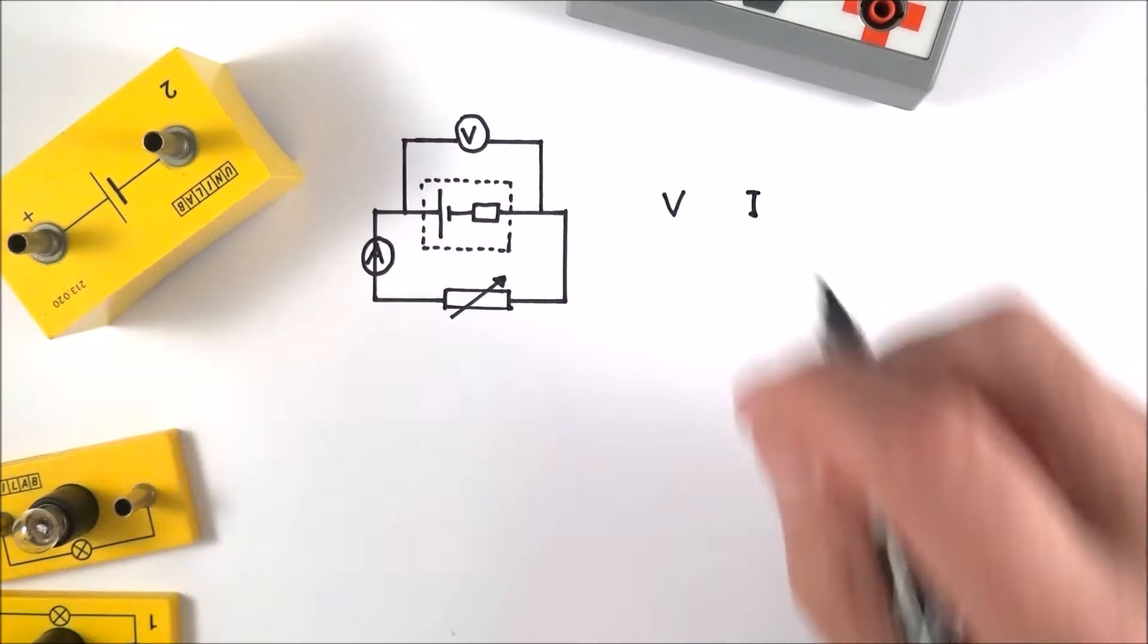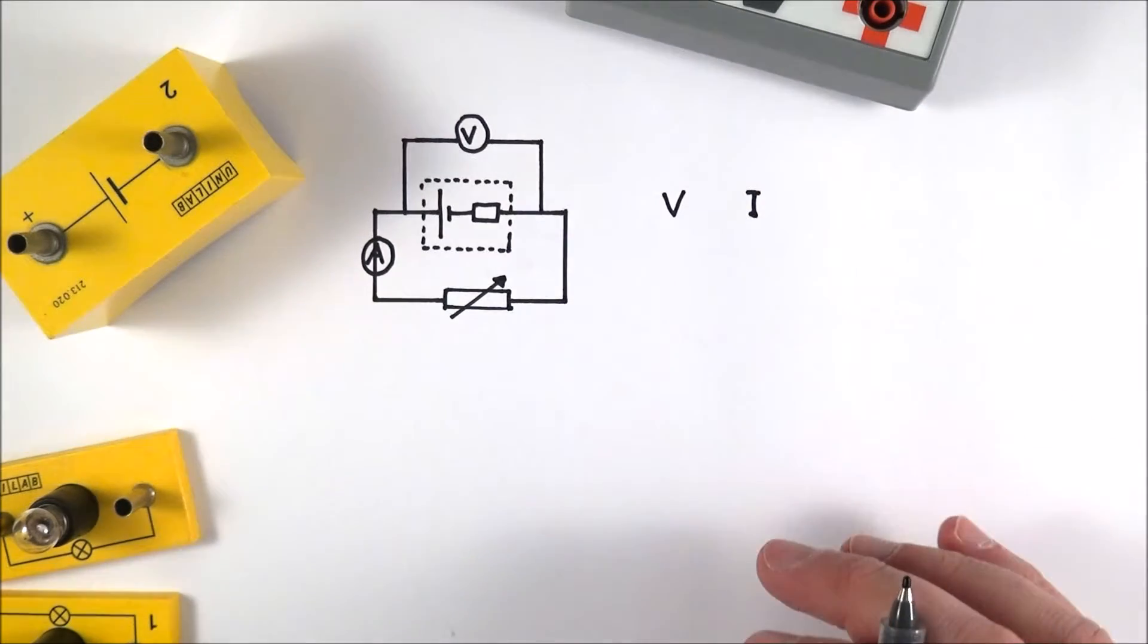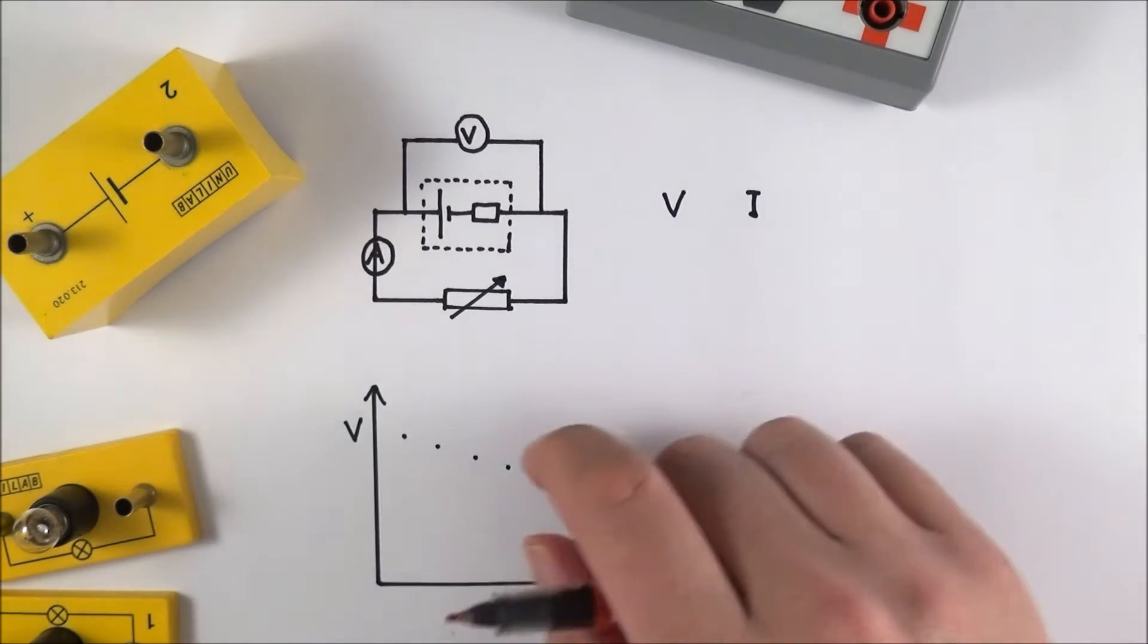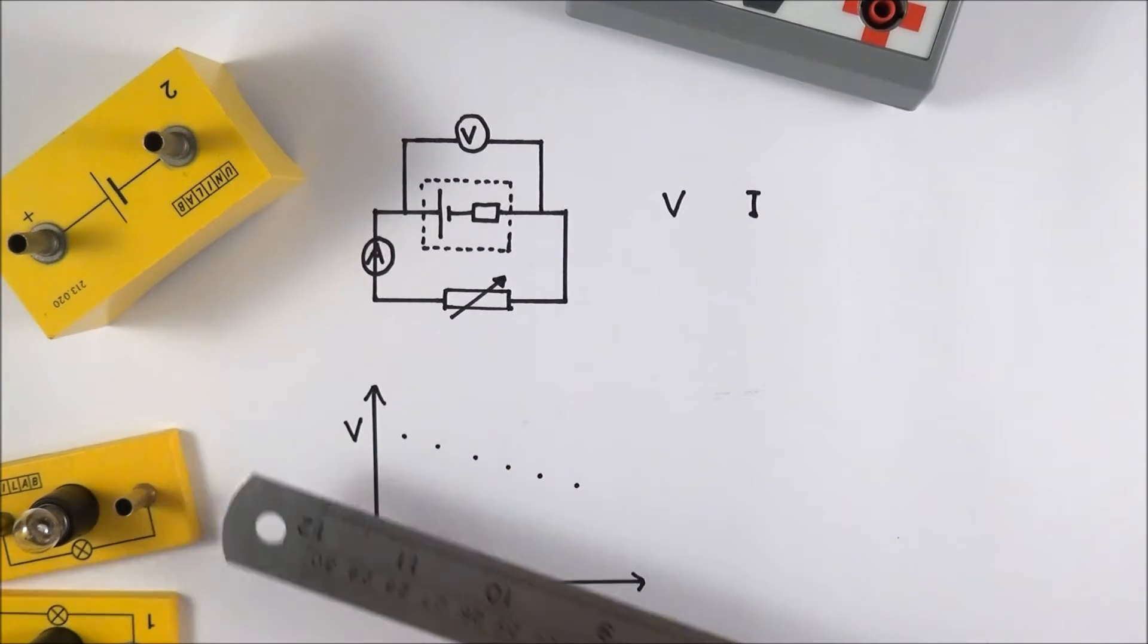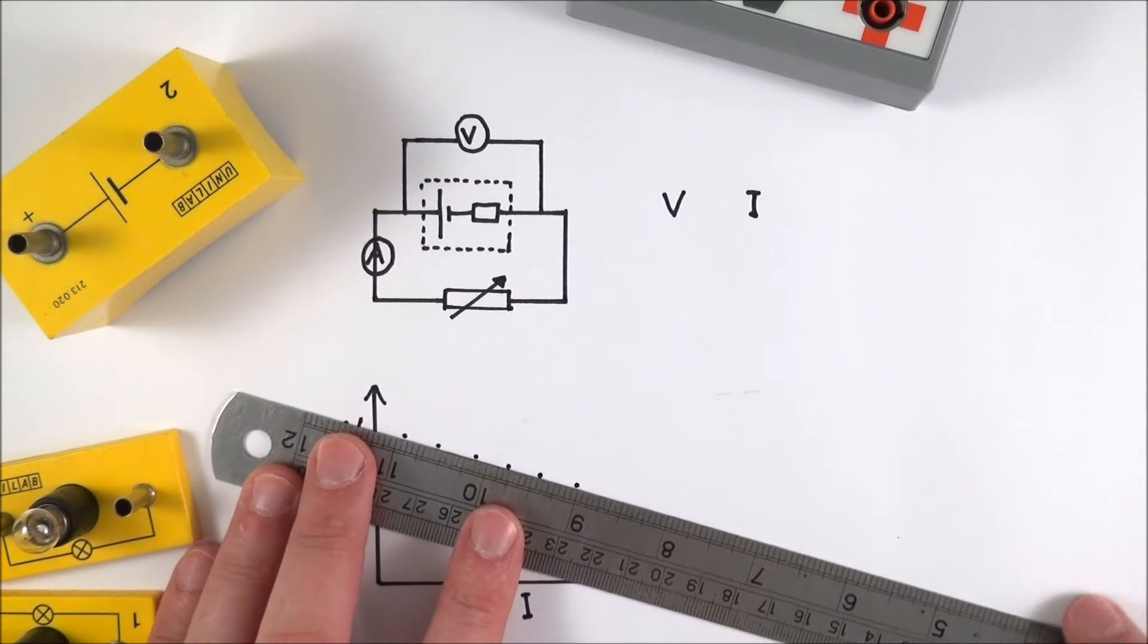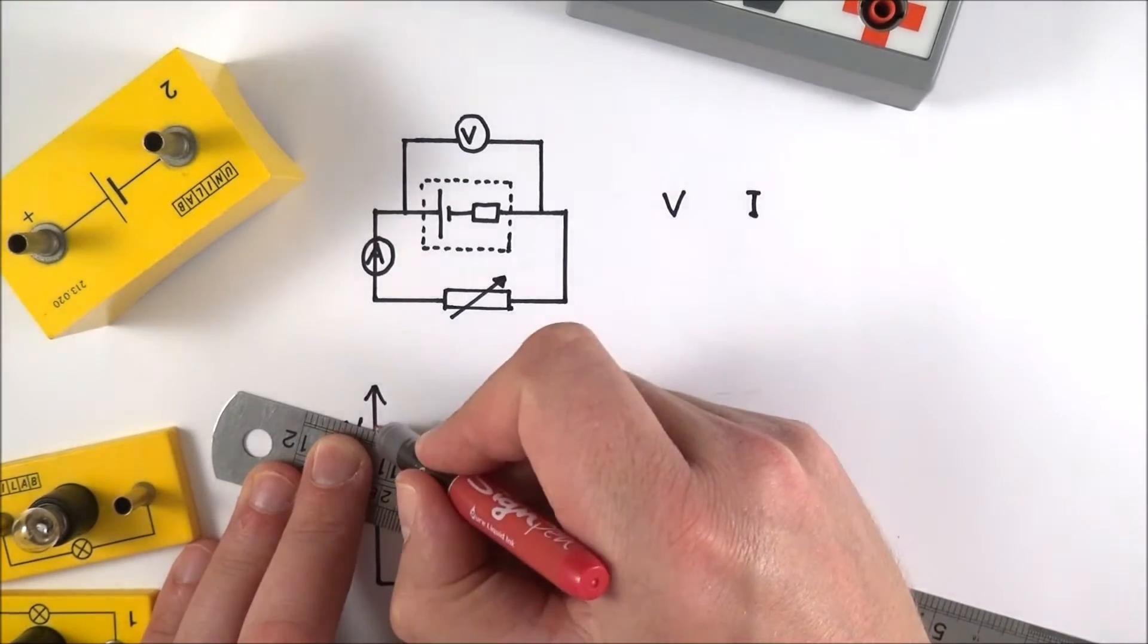So you're measuring V, you're measuring I, and then you can plot that on a graph like this. What you'll find is that your data should be in an approximately straight line. You can use your ruler and take this line back up to the y-axis.